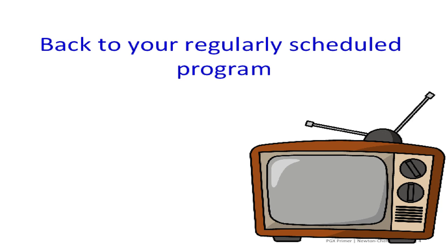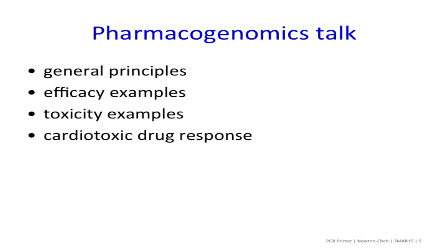This is a cathode ray tube — it used to be what people would watch television on. It doesn't have a remote, and I realize with millennials none of you have really seen this except in your parents' pictures. Today I'm going to talk about pharmacogenomics in general: general principles and some examples of the genetic basis of pharmacologic efficacy, pharmacologic toxicity, and then a few specific studies we're doing on cardiotoxic drug response.